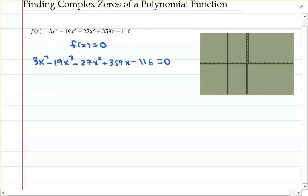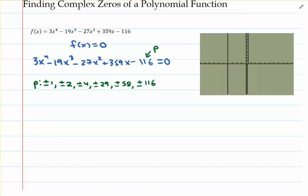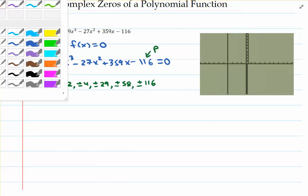Let's make use of the leading coefficient and the constant term. The constant term is negative 116. We're going to make a list for p using that number — all the numbers that divide negative 116, including pluses or minuses. So plus or minus 1, plus or minus 2, plus or minus 4, plus or minus 29, plus or minus 58, and plus or minus 116.